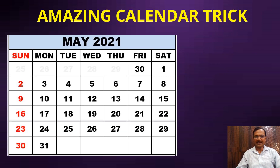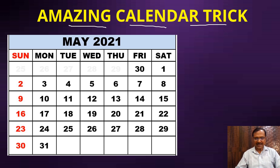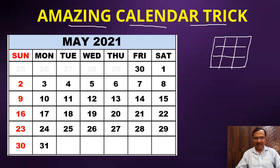So let's see the amazing calendar trick. I have picked up the current month's calendar — May 2021. You can see in this calendar that numbers exist in blocks of three. You can pick up any block of numbers. I'm encircling a block here: 4, 5, 6, 11, 12, 13, 18, 19, and 20.